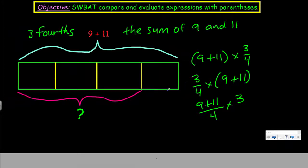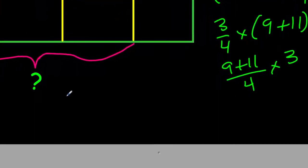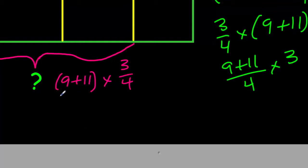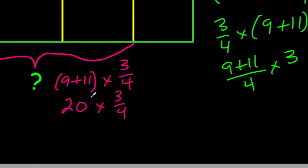See, if the parentheses weren't there, we would have to multiply first. We want to find the sum first and then multiply, and that's really important. We can find the sum of 9 and 11 first, and then divide the sum by four to find the value of one unit.